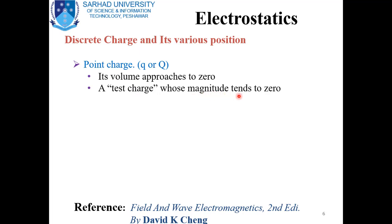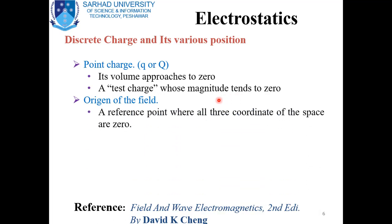In some books the test charge is represented by Q₀. To discuss the field of a point charge, we need a reference point which is known as the origin of the field, where all three coordinates of the space are zero. As you know, the field is related with the space coordinates, so if all three coordinates at a point have zero values, we call that point the origin of the field.